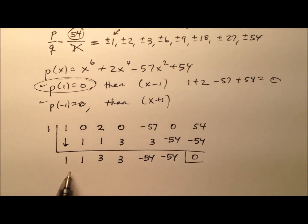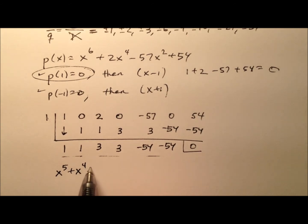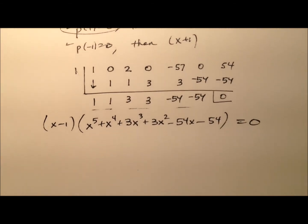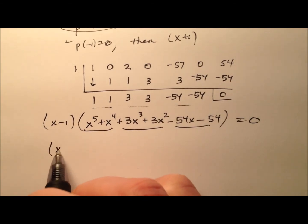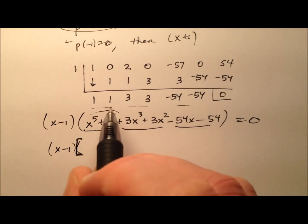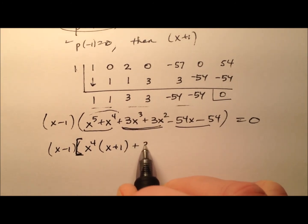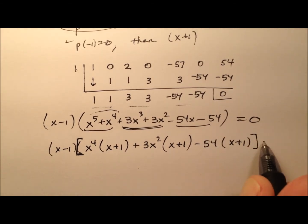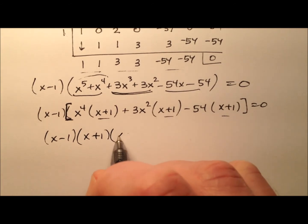This looks pretty good because now I'll be able to use factor by grouping. So let's build this back up. We have x to the 5th plus x to the 4th plus 3x cubed plus 3x squared minus 54x minus 54, multiplied by (x minus 1). Now let's apply factor by grouping. The GCF of the first pair is x to the 4th, leaving (x plus 1). The GCF of the middle pair is 3x squared, also leaving (x plus 1). And pulling out negative 54 from the last pair also leaves (x plus 1). So the x plus 1 factors out, leaving those greatest common factors.